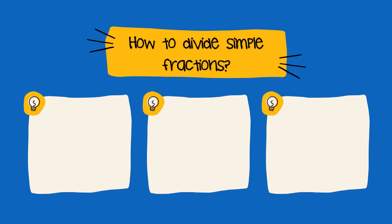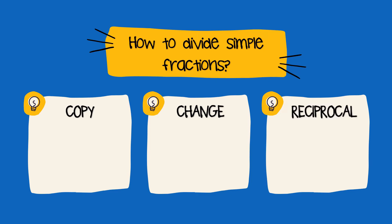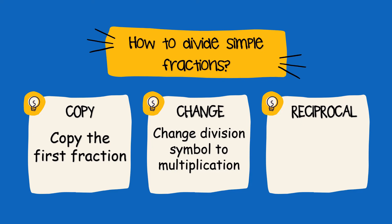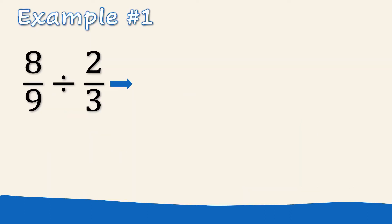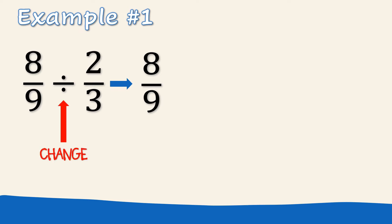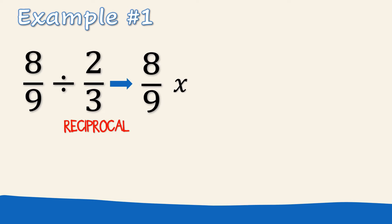Now, how to divide simple fractions? First, we need to copy the first fraction, next change the division symbol to multiplication, and then get the reciprocal of the second fraction. Let's try some examples. We have 8 ninths divided by 2 thirds. We need first to copy the first fraction, which is 8 ninths. Change division to multiplication symbol. And then get the reciprocal of the second fraction, which is 2 thirds, so it will become 3 over 2.